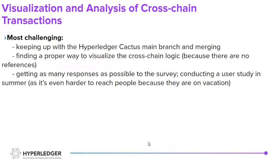The most challenging aspects were keeping up with the Hyperledger Cactus main branch and managing merges, at least at the beginning. Also challenging was finding a proper way to visualize the cross-chain logic because there are no references — you practically don't have a model to go to. And getting as many survey responses as possible was also challenging, because conducting a user study in summer is harder since people are difficult to reach when they are on vacation.